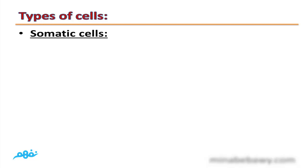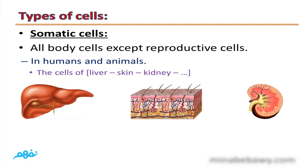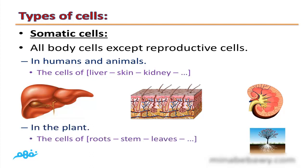Types of cells. The first type is somatic cells. Somatic cells are all body cells except reproductive cells. For example, in humans and animals, the cells of liver, skin, and kidney are somatic cells. In plants, the cells of roots, stem, and leaves are somatic cells.